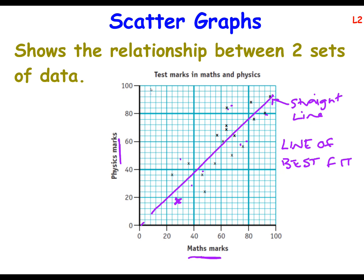If there was one student who was dreadful at maths and brilliant at physics and he was over here, we would ignore it. We wouldn't draw our line towards that cross. We would just circle it and call it an outlier. In other words, it's a one off. We're going to ignore it and it's either an anomaly or an outlier. And what we do with it is we circle it and say we're going to ignore that when we draw our line of best fit.